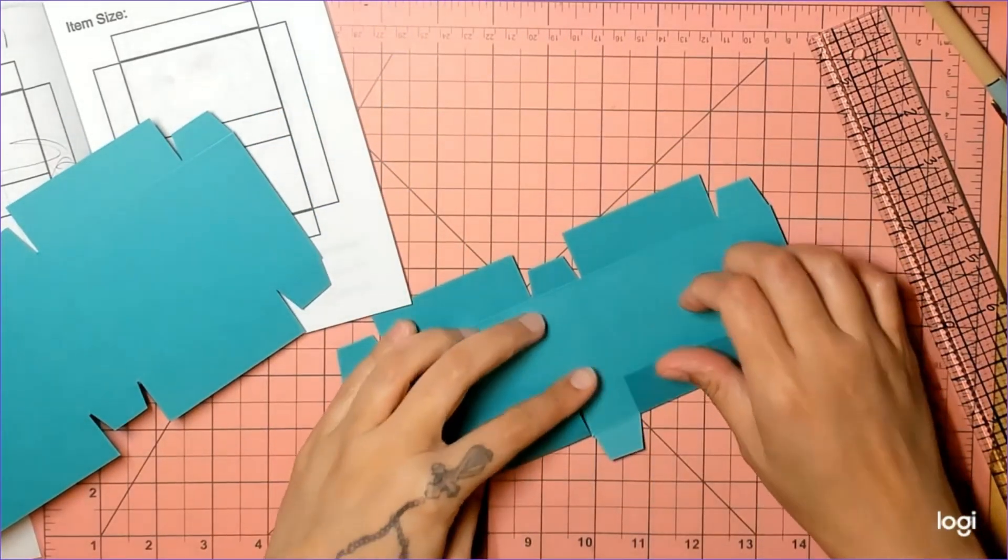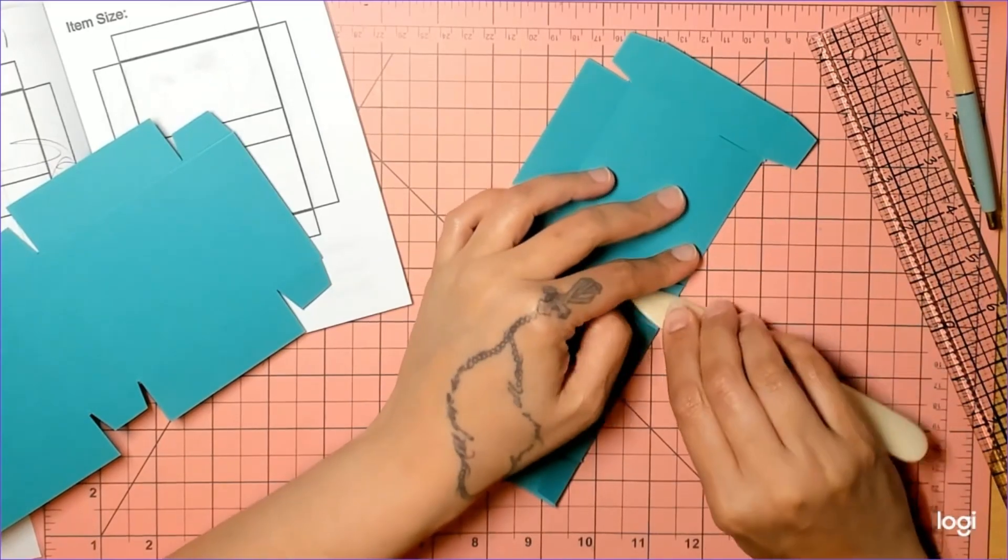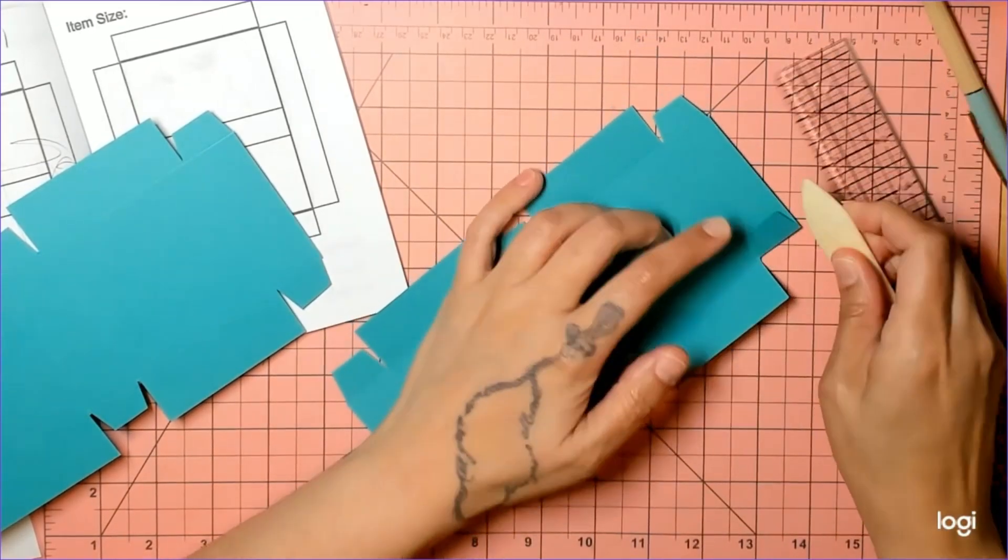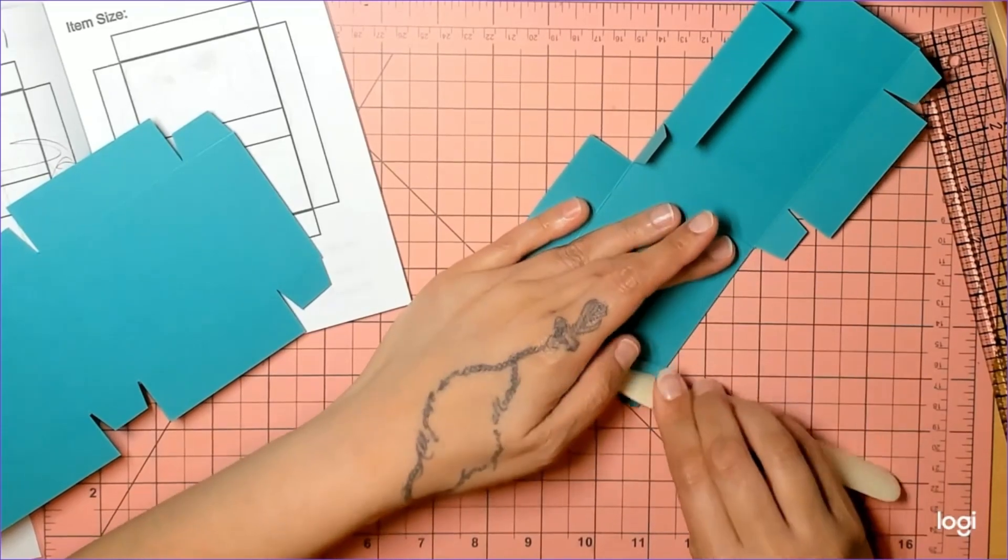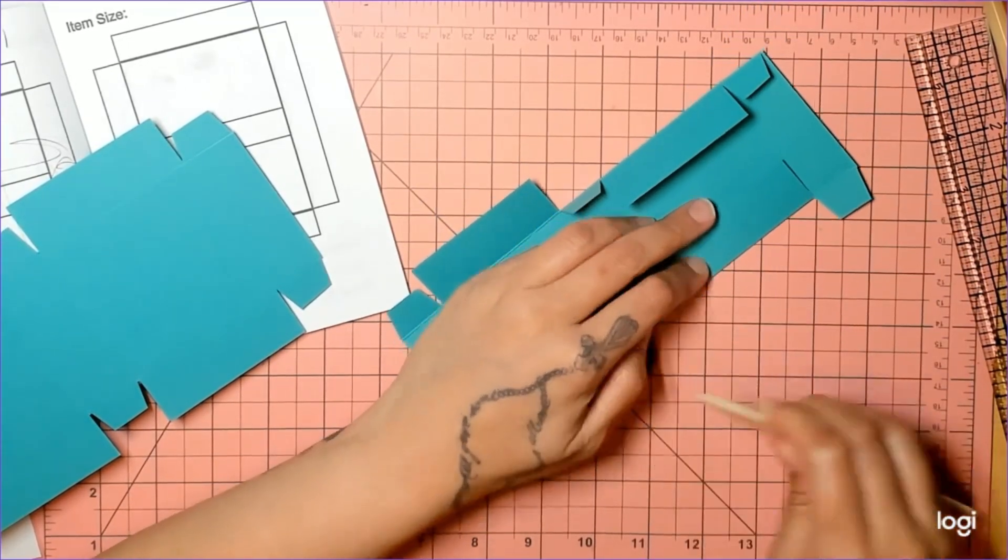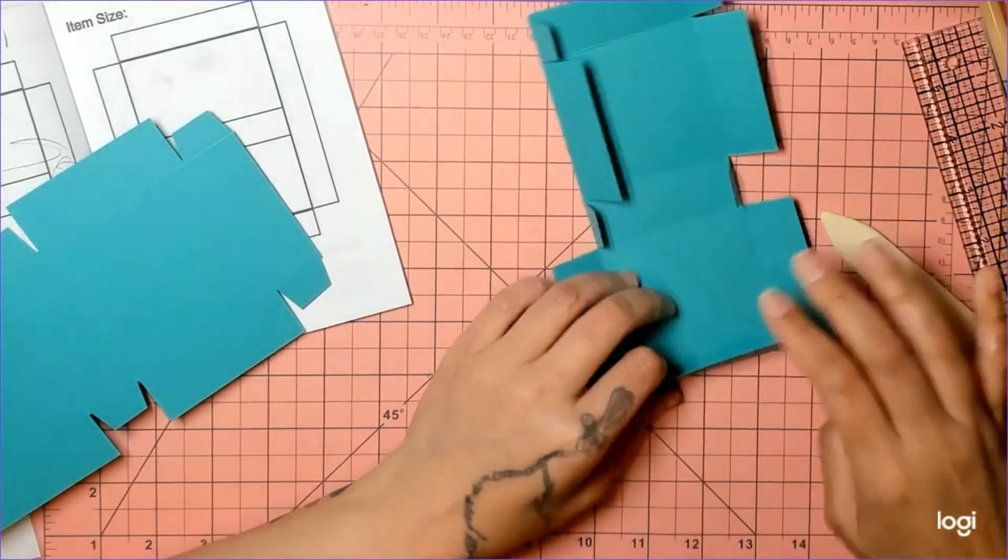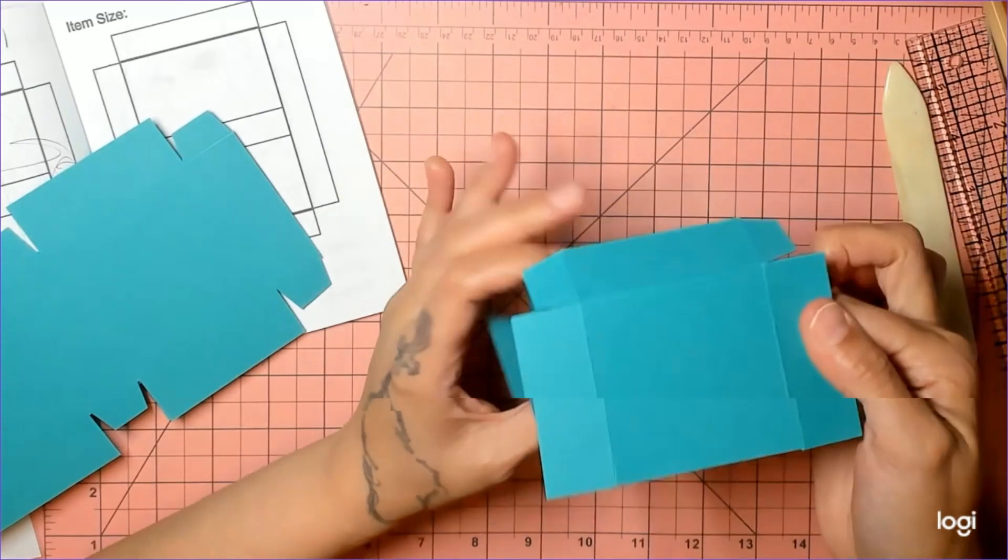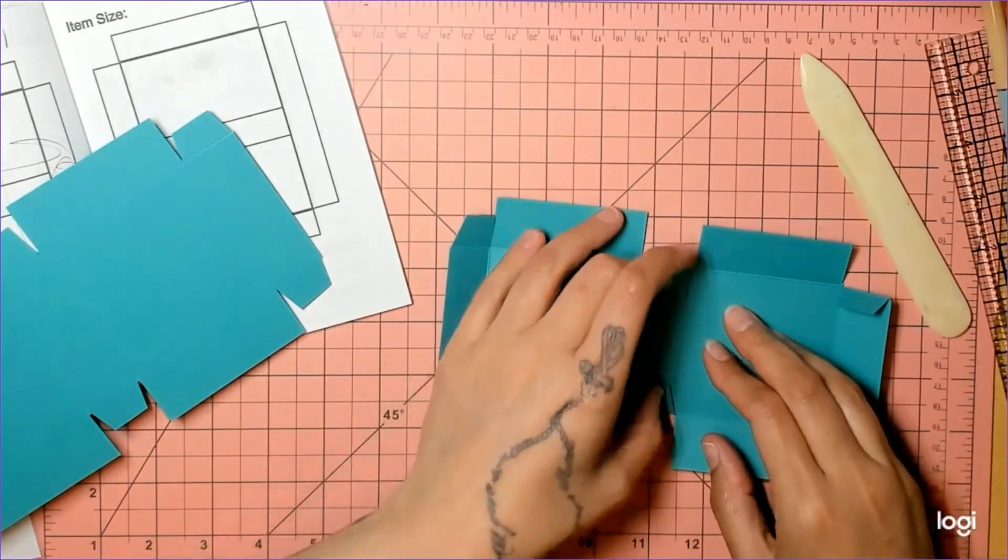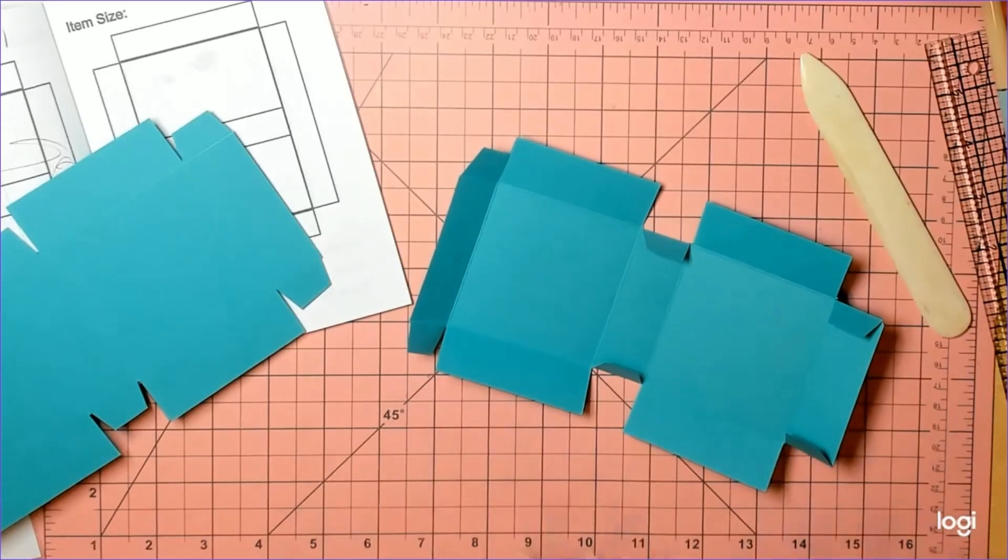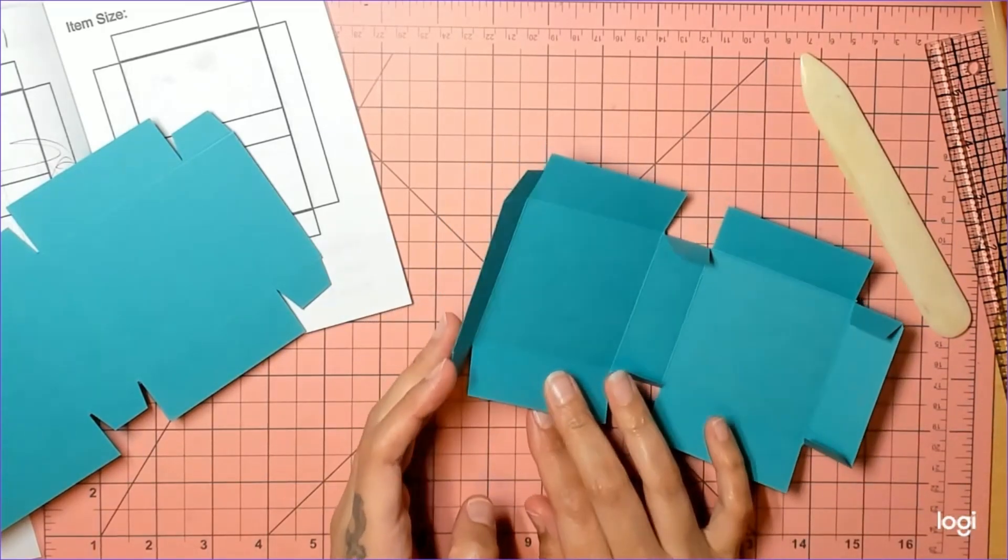Now you're gonna go ahead and make sure you take the bone folder and you're gonna burnish really well. This is pretty thick paper—it's a retired Stampin' Up. Their paper used to be a lot thicker, I think almost like 80-pound weight. I've probably had this since 2008. Now you need to determine what is going to be the top and the bottom. If you have directional paper, it matters. Whatever is going to be your top or your lid, you're gonna have two tabs, and whatever's going to be the bottom is going to have four tabs.